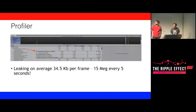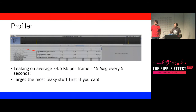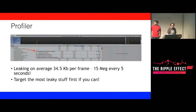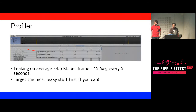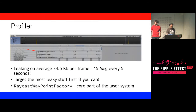The usual triage approach is to target the worst thing first. The worst overall was the Raycast Waypoint Factory — a core part of the game that handled the beam of light the player manipulates. That was the core part of the laser system.